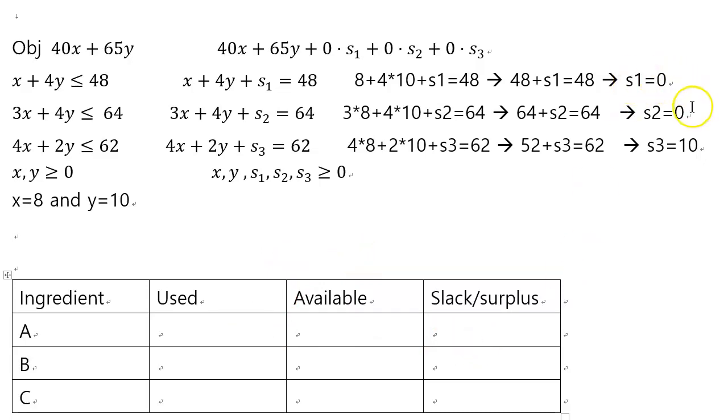So you get 10 as your slack surplus variable for the last one. We can fill those numbers in at the slack surplus column. And then the available is what's on the right side, 48, 64, 62. So these were the available quantity of the ingredients every day. The manufacturer was buying this much quantity of the ingredients A, B, and C.